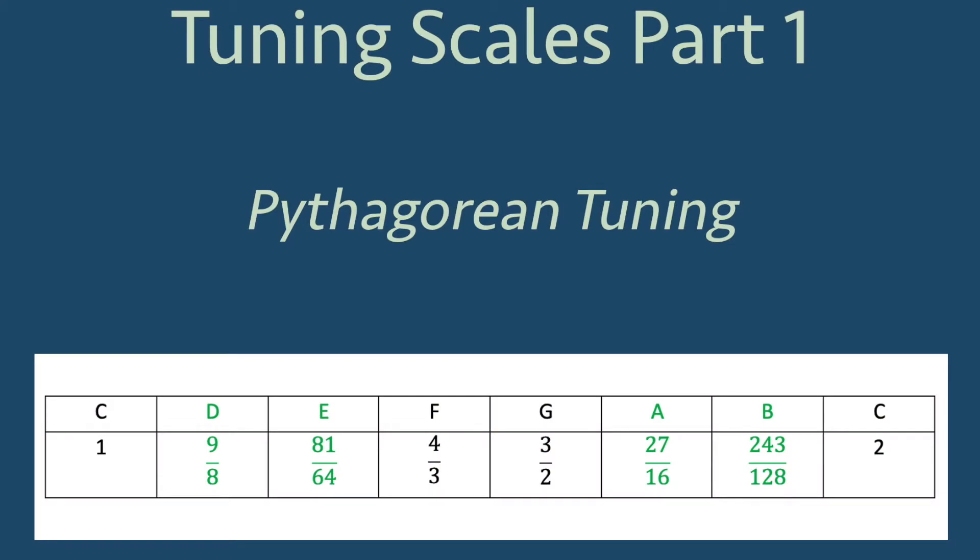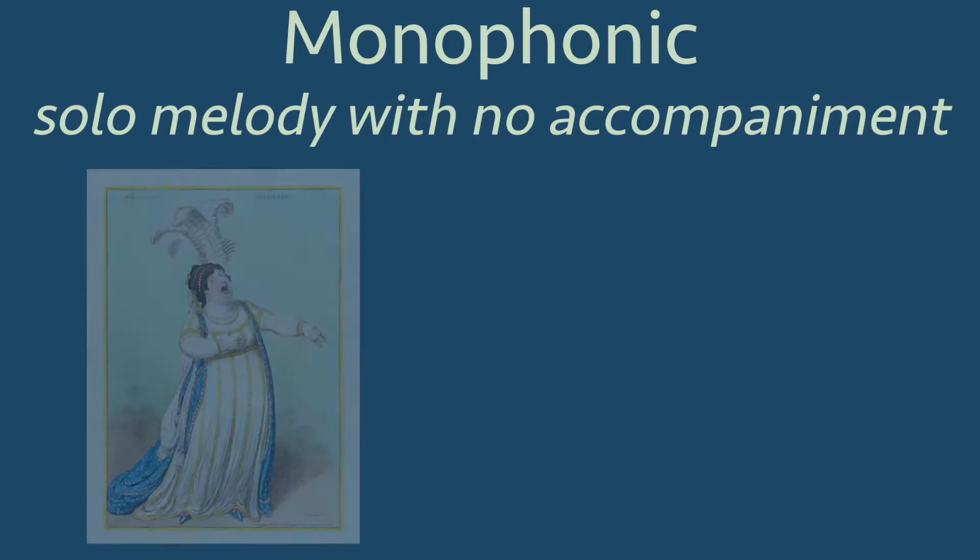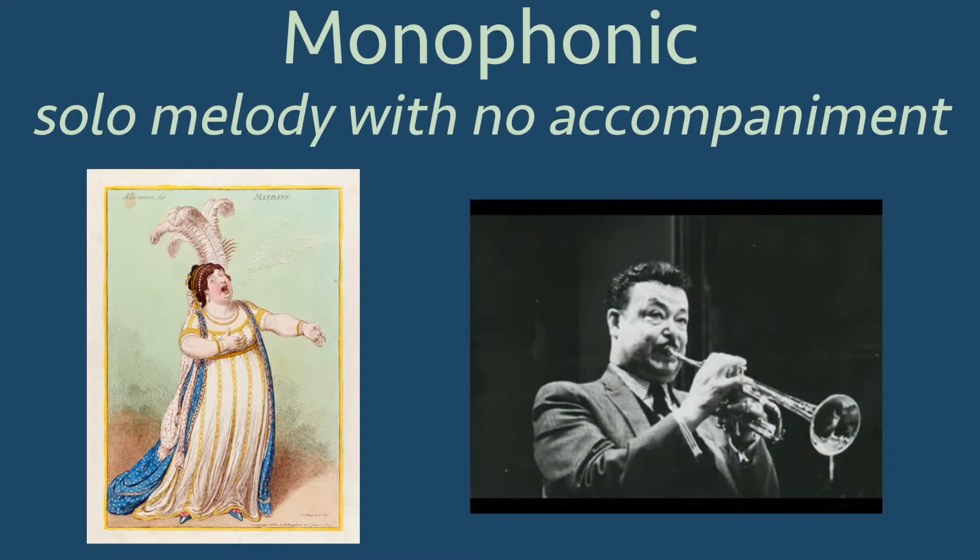A lot of early music in most cultures was monophonic, a simple melody sung by a voice or played on an instrument with no accompaniment. This means one person would sing with no other music playing, what we call acapella, or an instrument would play a simple melody with no other instrument playing.